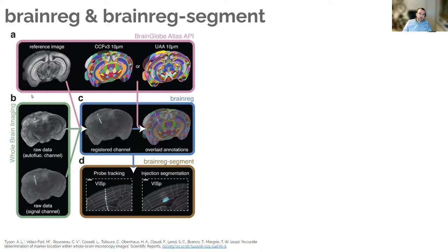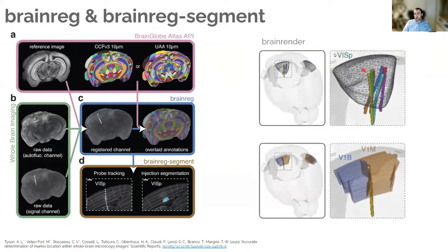What you do is you register your data with the reference image from the atlas and then segment out your structure of interest—in this case, Neuropixels probe. You can provide some tools to analyze it, and then we have also a tool called BrainRender that allows you to visualize any of your data in atlas space.